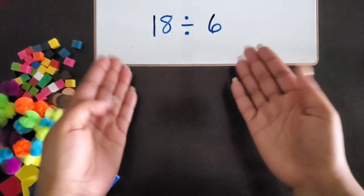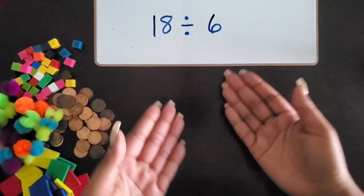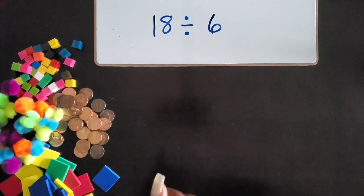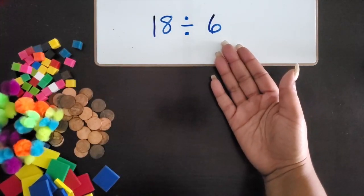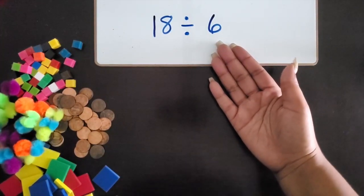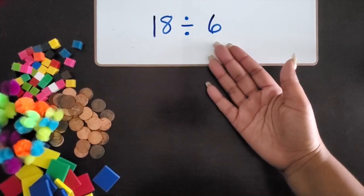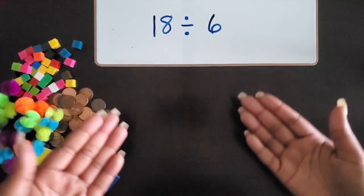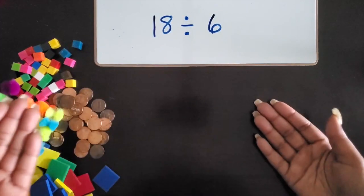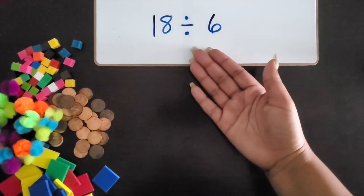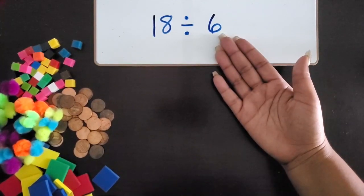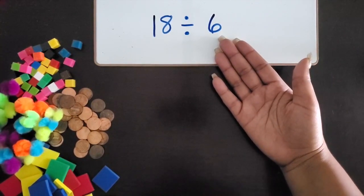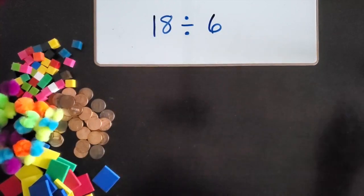If you have a story problem or word problem that gives you the context that the six is the number of groups, or the six is the number in each group, you can represent it based off the story problem. Here we just have an expression, so we can represent the six as the number of groups or the number in each group. Let me show you how.